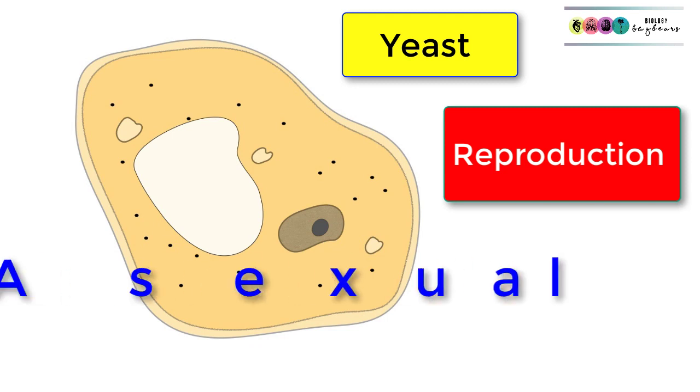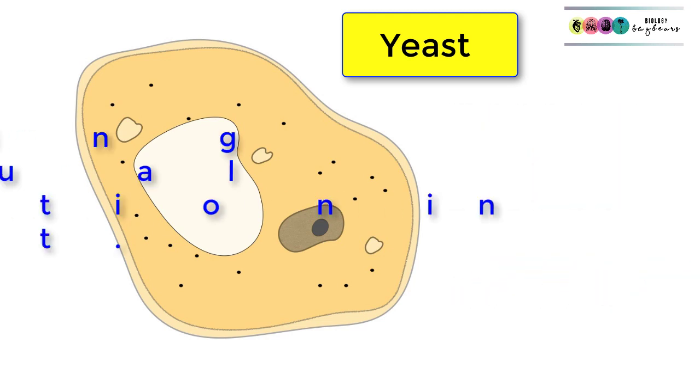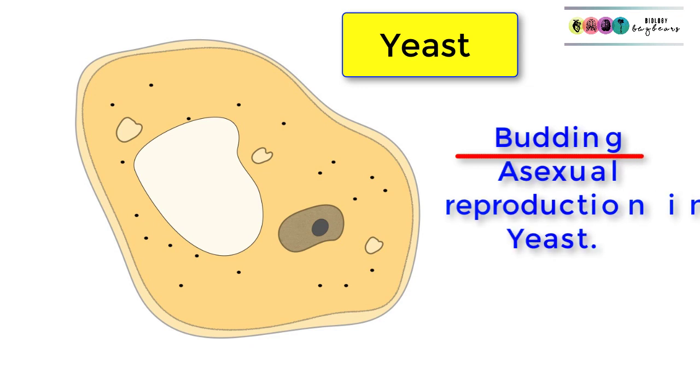Next we have to discuss reproduction in yeast. They reproduce asexually, so there is one parent involved and no gametes. This is known as budding, so make sure you know that asexual reproduction in yeast is called budding.